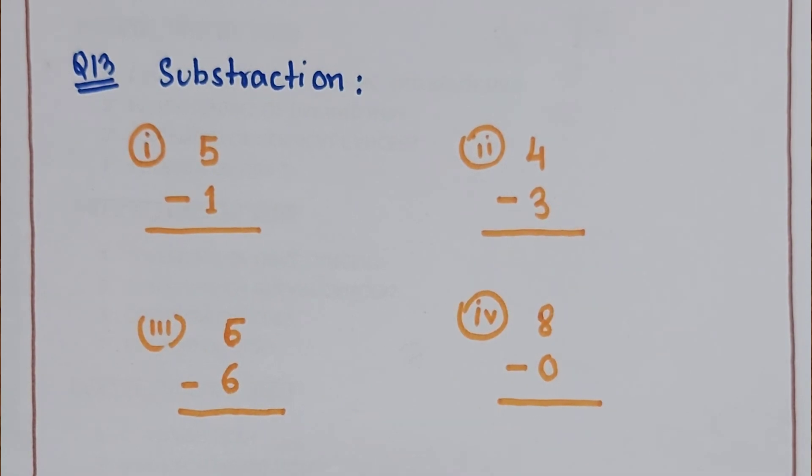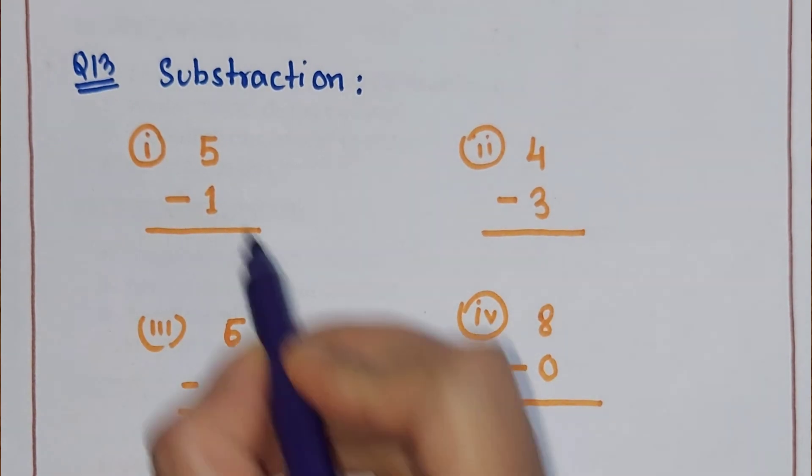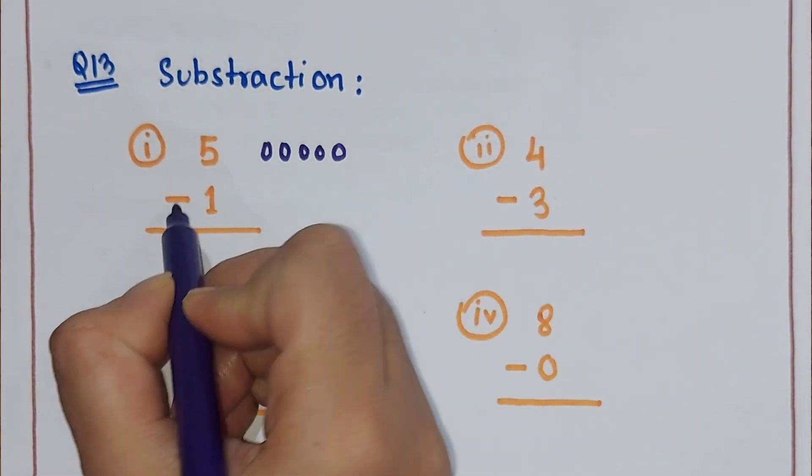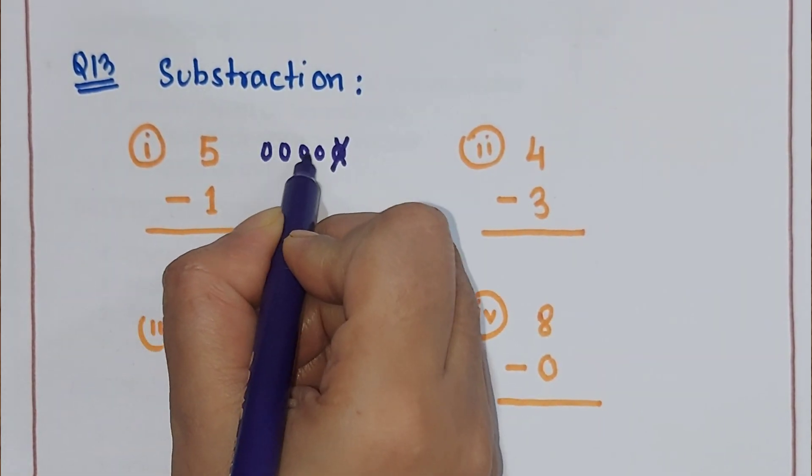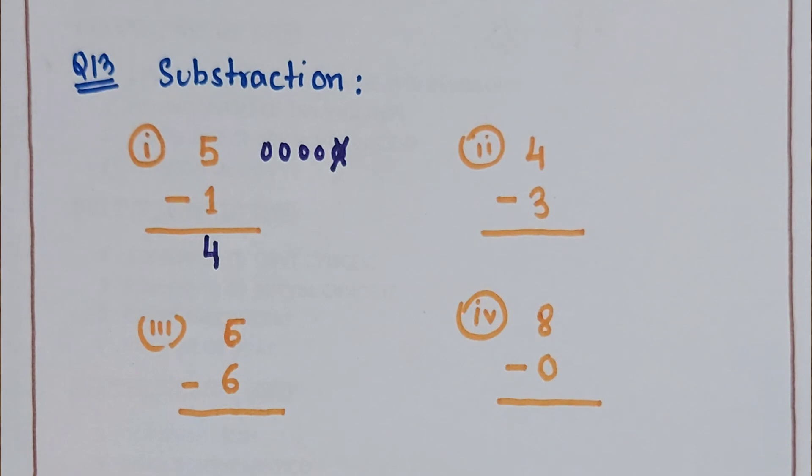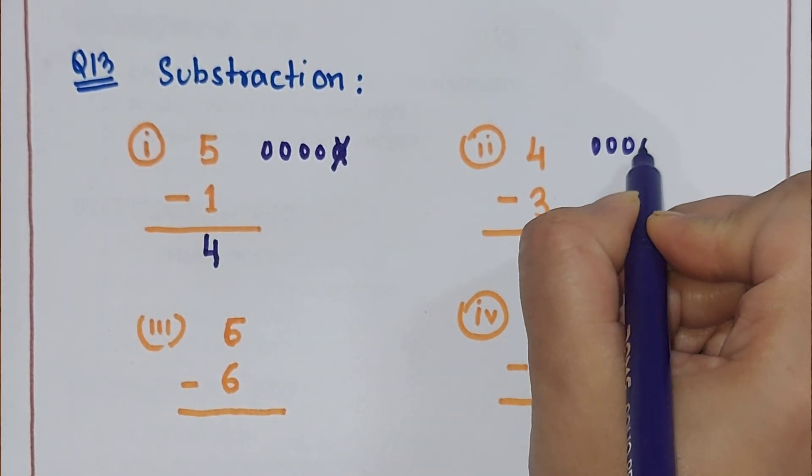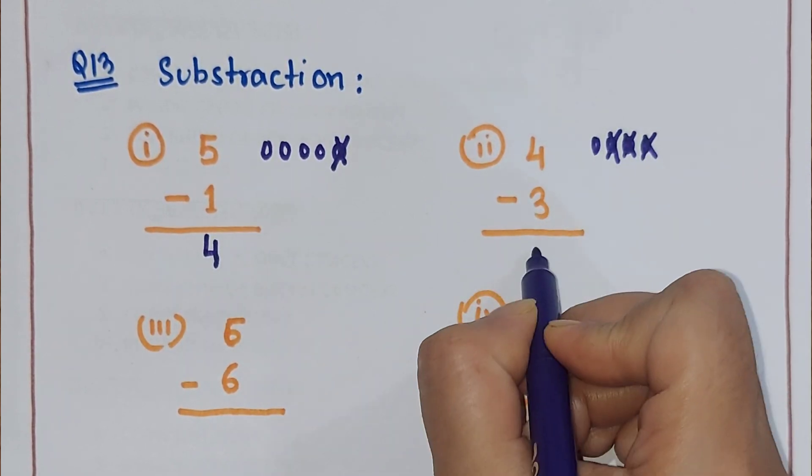Next is subtraction. Here, five minus one. We'll draw five objects, then minus one means we cross out one object. So how many remain? Four. Next, four objects and minus how many? Three. We cross out three objects. How many remain? One.